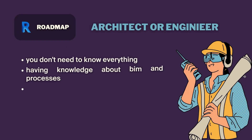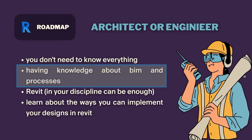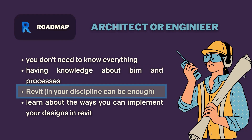If you want to choose the architect or engineer path, you need to know some tips. The first one is that you don't need to know everything — having an intermediate level of Revit knowledge would be enough. Having knowledge about the basic BIM terms and processes would be great too. It's also enough to know Revit in your own discipline and in just one area. For example, if you're an architect you can nail Revit in the architectural part, or if you are an MEP engineer you need to know Revit in MEP areas.